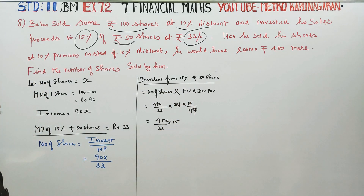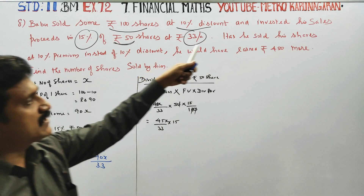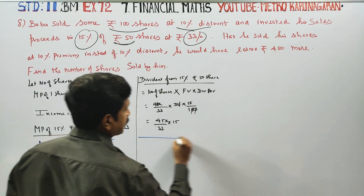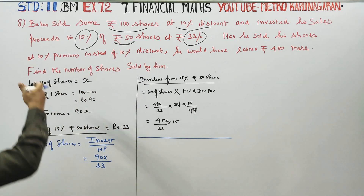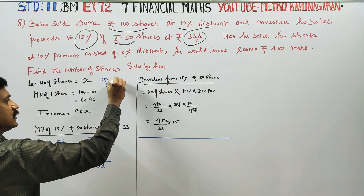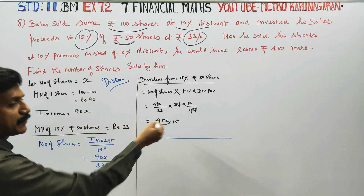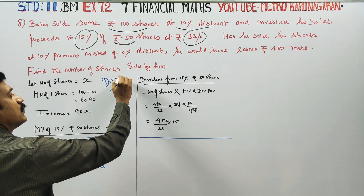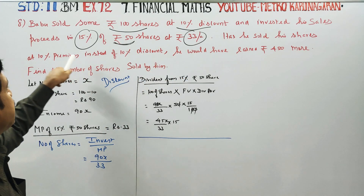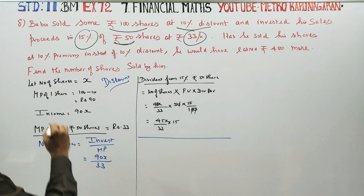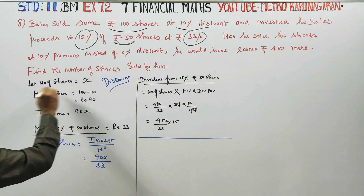This is the dividend from the 15% share. Now, as he sold his shares at 10% discount in Case 1, that is the discount case. The market price under discount is Rs.90.